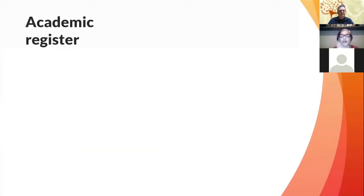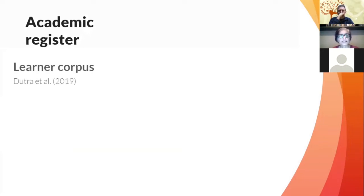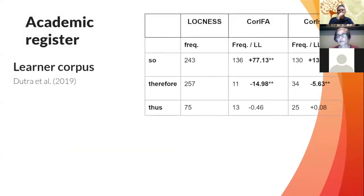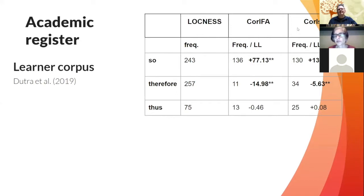I want to talk about a series of tasks prepared with some co-authors in which we focus on the academic register. More specifically, I'll report results from a study on academic essays published last year, which comes from our learner corpus. We compared the use of three linking adverbials in CORIFA — a corpus of English for academic purposes — and the corpus of language without borders. We compared the results using log-likelihood statistics to see if the frequency used by non-native students was above or below expectations.